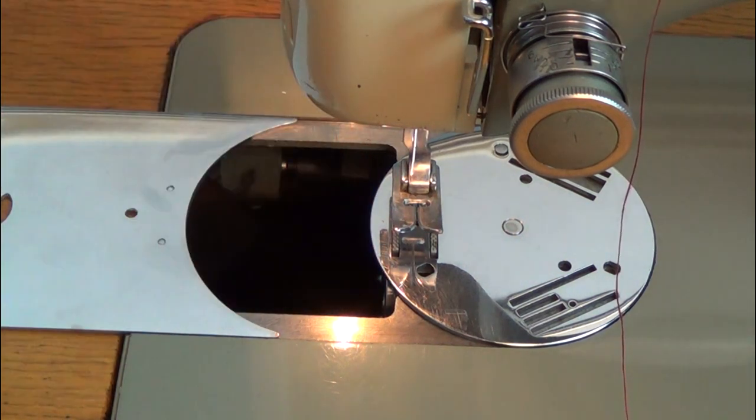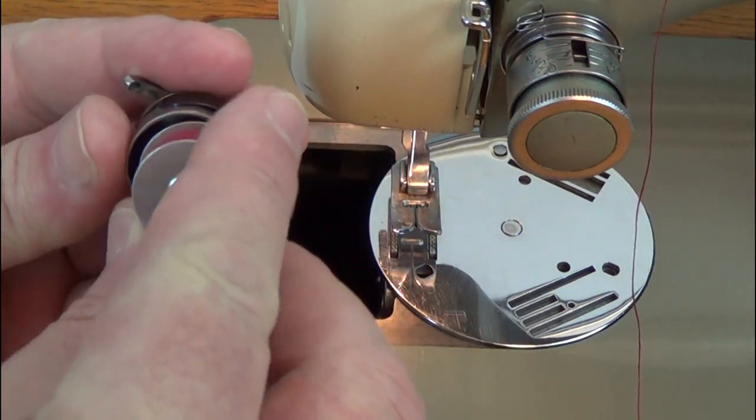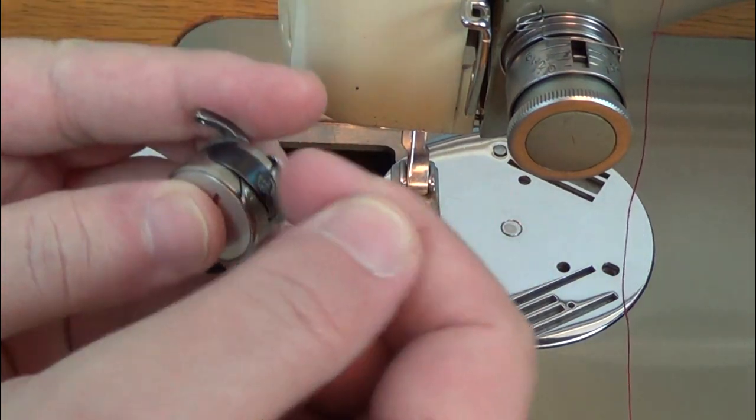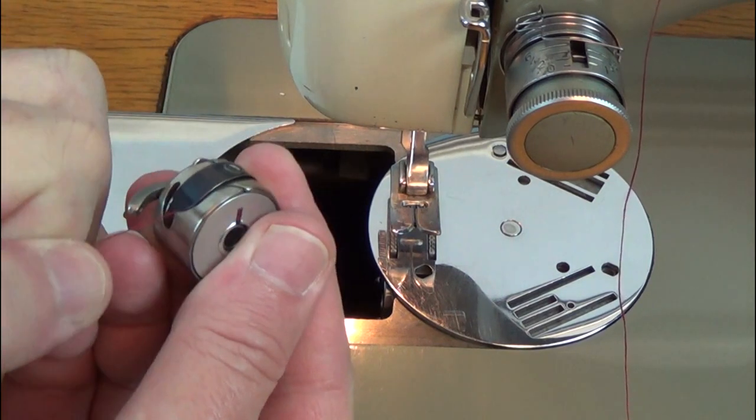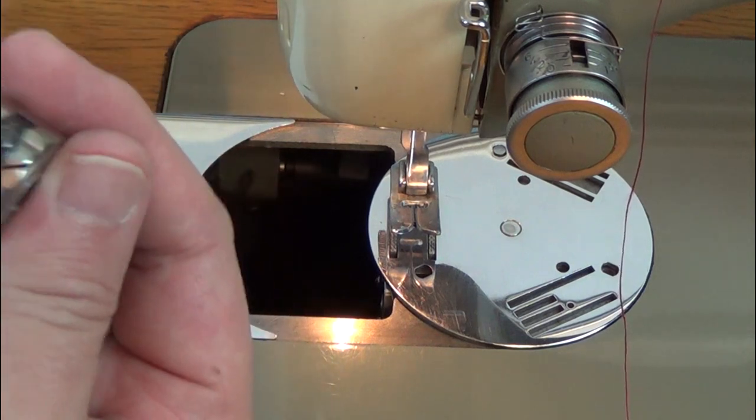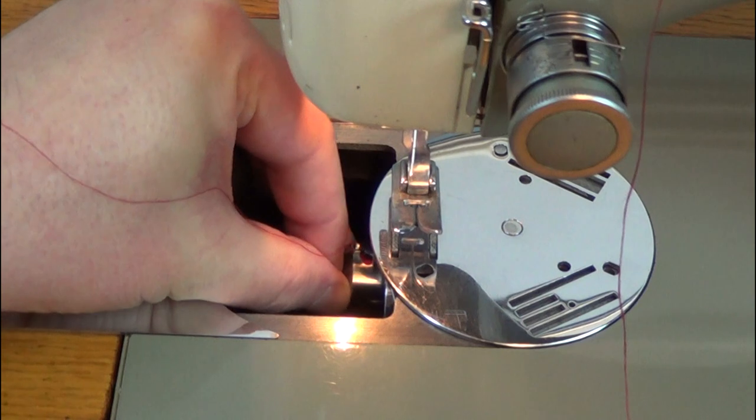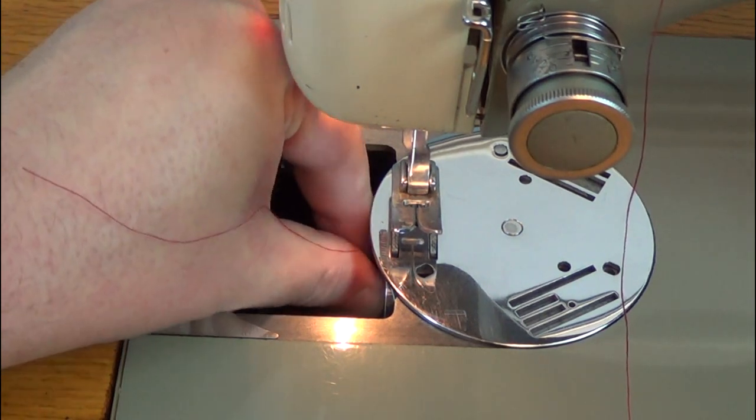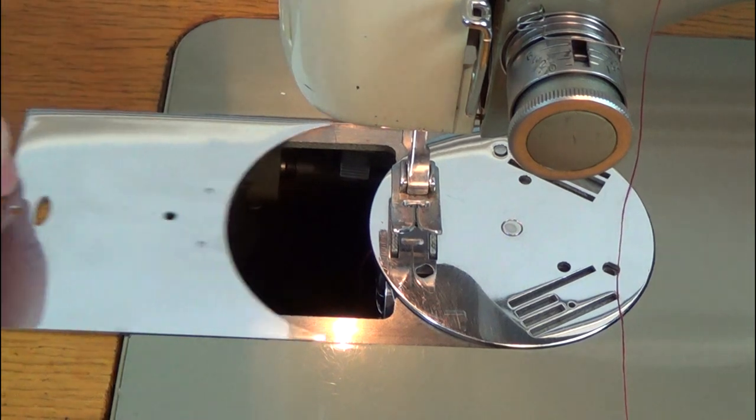Remove the bobbin case. The bobbin goes into the case with the thread coming off in a clockwise direction. The thread is pulled under the tension spring until you hear it click into place. It clips in like many common class 15 style machines. Slide close the bobbin cover.